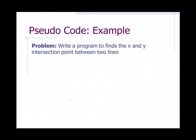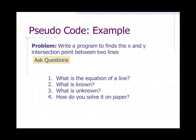Alright, let's solve a problem. Write a program to find the x and y intersection point between two lines. Alright, so the first step is to ask some questions. First, what is the equation of a line? What is known? What is unknown? How do you even solve this on paper? So before you even think about trying to write a program for this, you need to try to solve this on paper first.